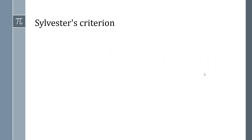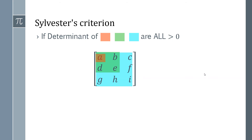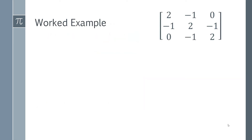Let's look at Sylvester's criterion in more detail — the fastest way to prove whether a matrix is positive definite. We have a matrix that we divide into three sub-matrices. If the determinant of all of those highlighted sub-matrices is greater than zero, then the matrix is positive definite. This is a sufficient criterion: once you've proven every sub-matrix determinant is greater than zero, you've proven without any further calculation that you have a positive definite matrix.